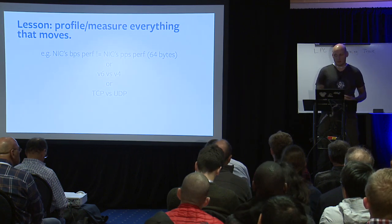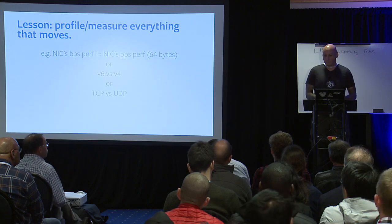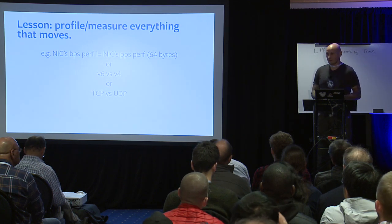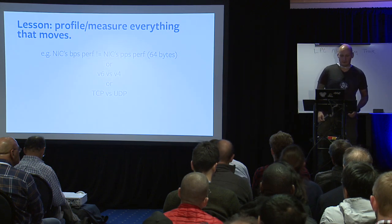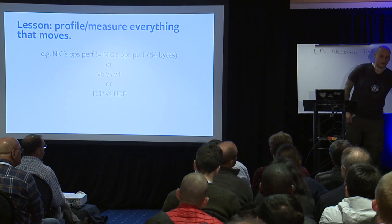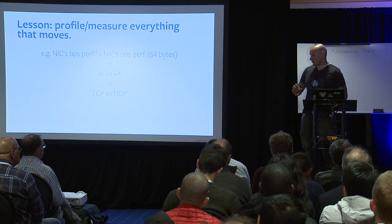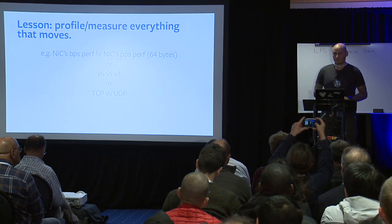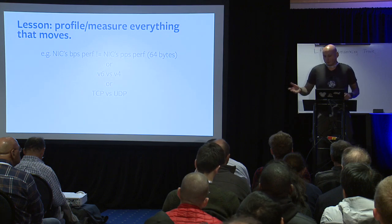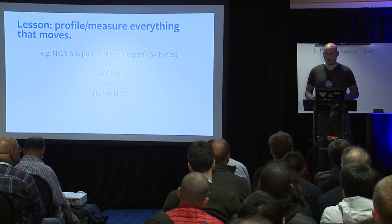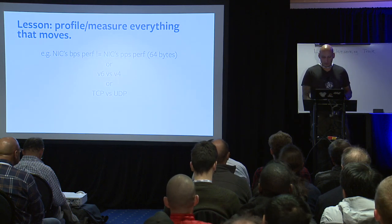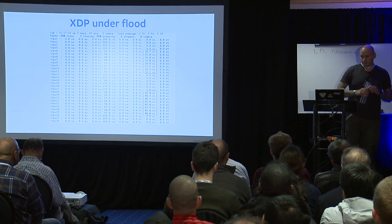V4 versus V6 parsing costs differ on the NIC, and surprisingly TCP is slower than UDP in terms of packets per second. The biggest problem is that NICs are kind of a black box — you don't know where the bottleneck is. There's no telemetry like ETH tools that would say 'this NIC is running at 50% capacity.' The only way you find out you've hit the limit is when it suddenly starts dropping millions of packets per second.